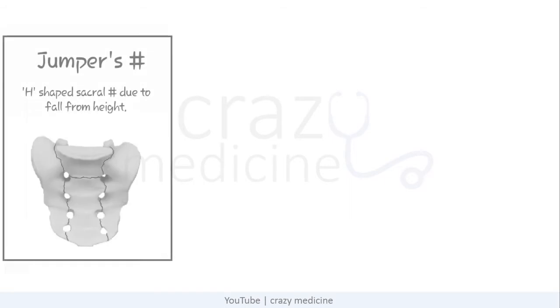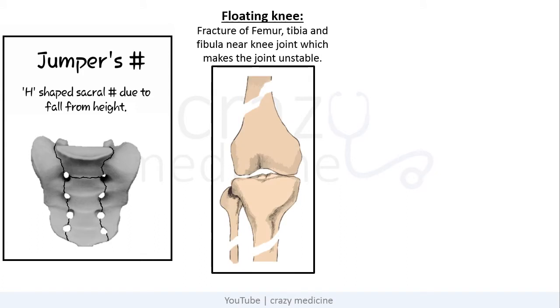Then Jumper's fracture — it is a wedge-shaped sacral fracture due to fall from height. Then Floating knee — it is fracture of femur, tibia, and fibula near the knee joint, which makes the joint unstable.